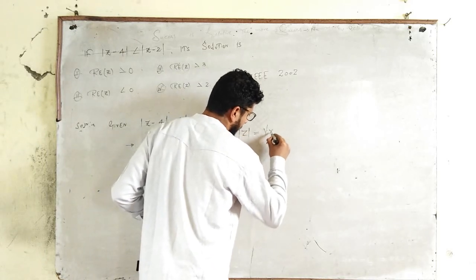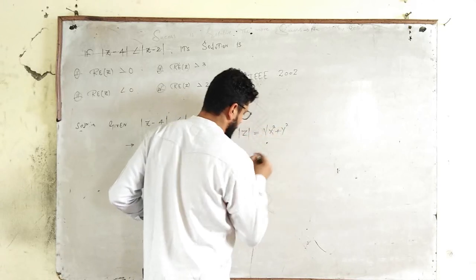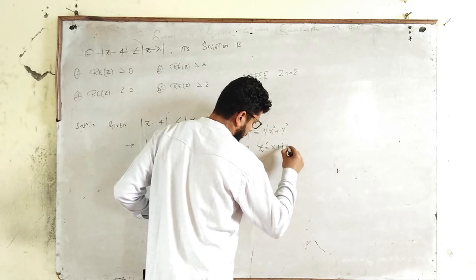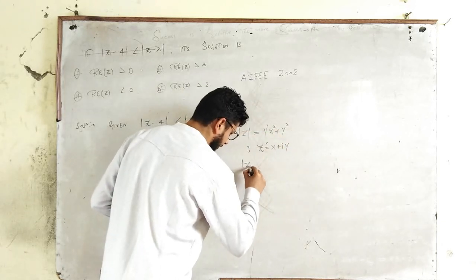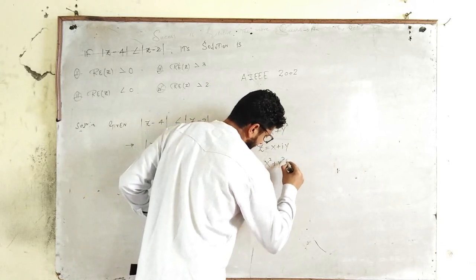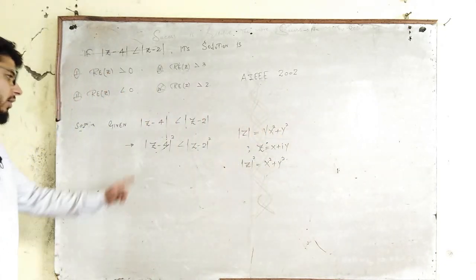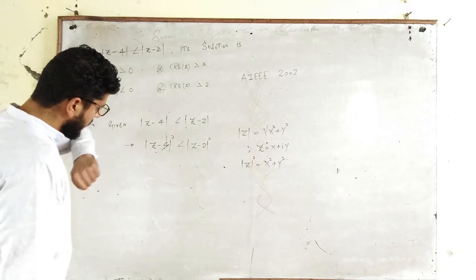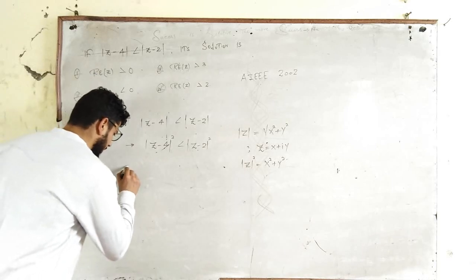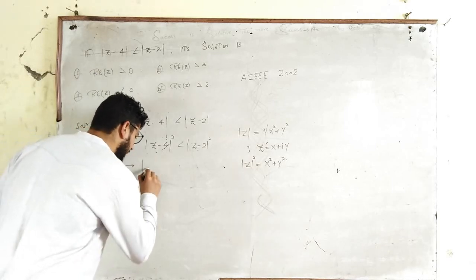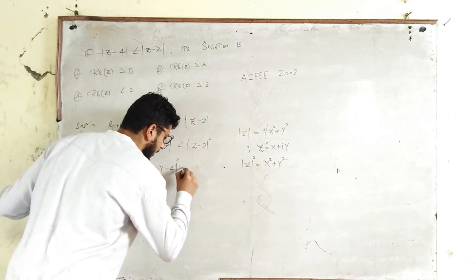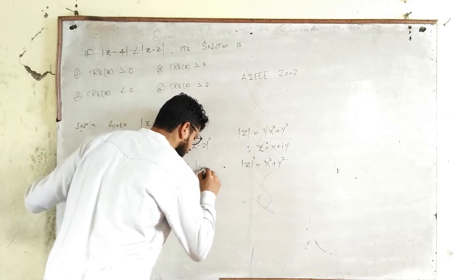You know the modulus of z equals the square root of x² + y², where z is a complex number x + iy. Then you can say |z| whole square is x² + y². Similarly, I have just squared both sides so that I can get rid of the root. So you can write it as |x + iy - 4|² is less than |x + iy - 2|².